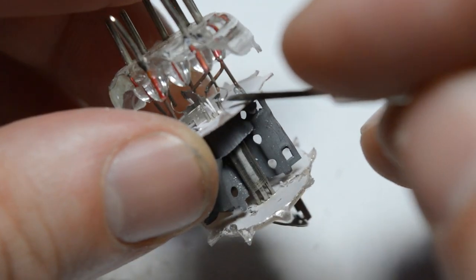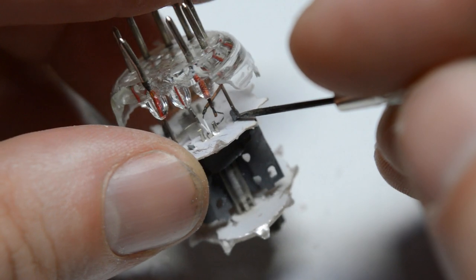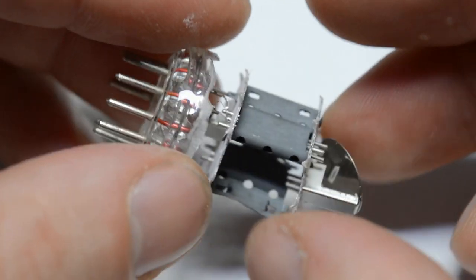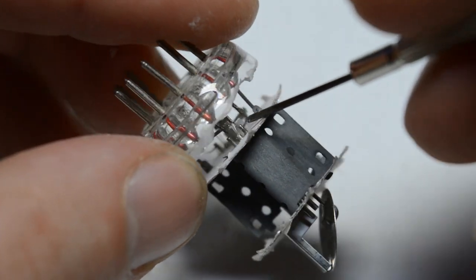Right next to it, we have the grid connected through this wire, goes directly outside. And then we got the anode. And the same structure can be found on the other side, where I didn't manage to break anything yet.